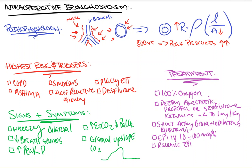We also want to use steroids — usually hydrocortisone 100 milligrams — as they can help with the swelling and inflammation resulting from bronchospasm. Finally, if the bronchospasm has not resolved by this point, the last resort is ECMO — extracorporeal membrane oxygenation — to oxygenate the patient while you work to resolve the bronchospasm. Once resolved, we should always get an ABG to ensure that any metabolic derangements are addressed, as they can vary depending on how long the episode lasted.